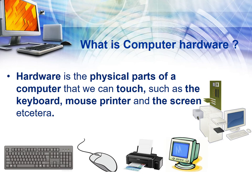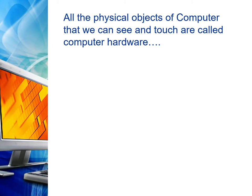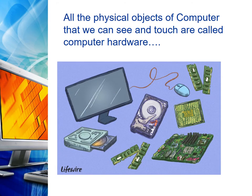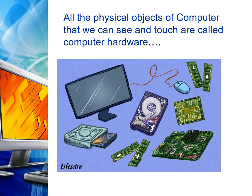Yeh woh parts hain jinhe touch bhi kiya ja sakta hai, feel kiya ja sakta hai, dekha ja sakta hai — these are computer hardware. The physical objects of a computer that we can see and touch are called computer hardware. Computer ka koi bhi part jo physical existence rakhta hai, usse hum computer hardware kahenge.